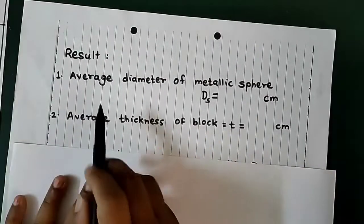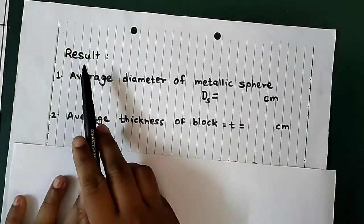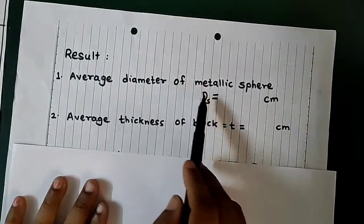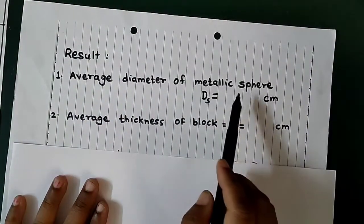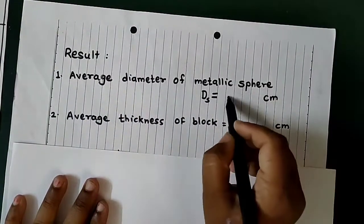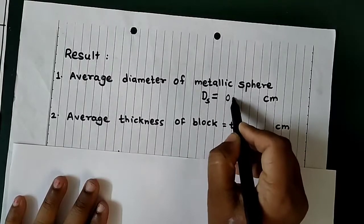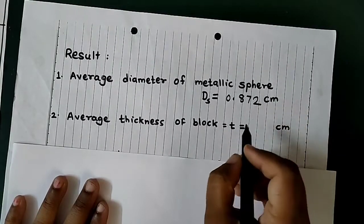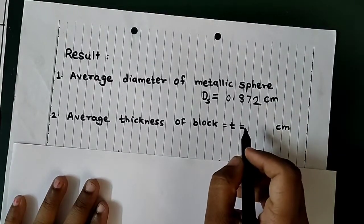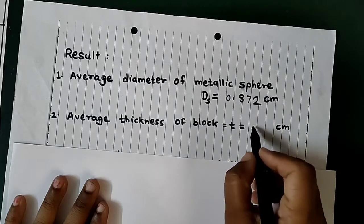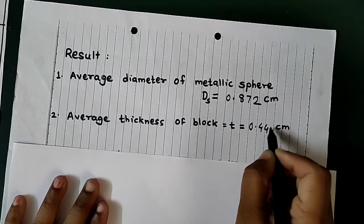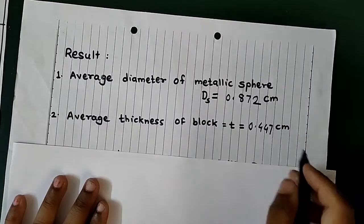Finally, the results: the average diameter of the metallic sphere is equal to 0.872 cm, and the thickness of the block is 0.447 cm.